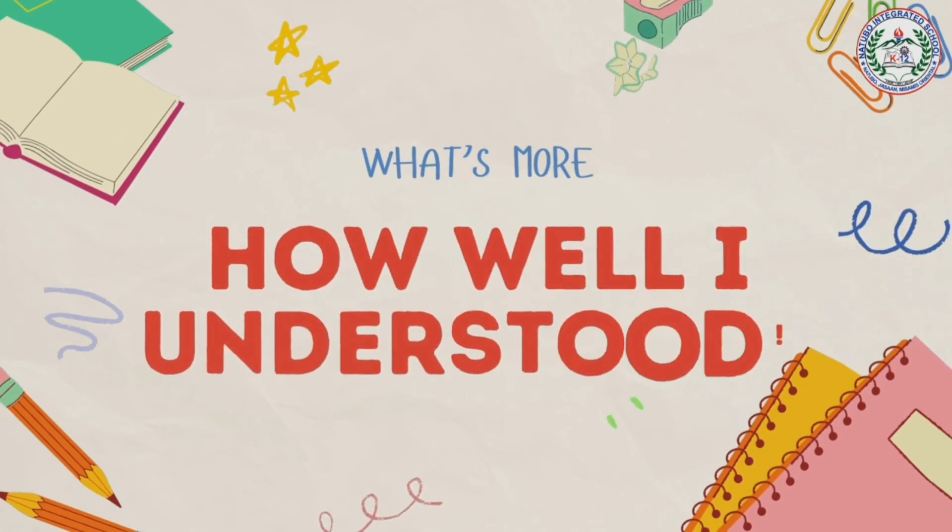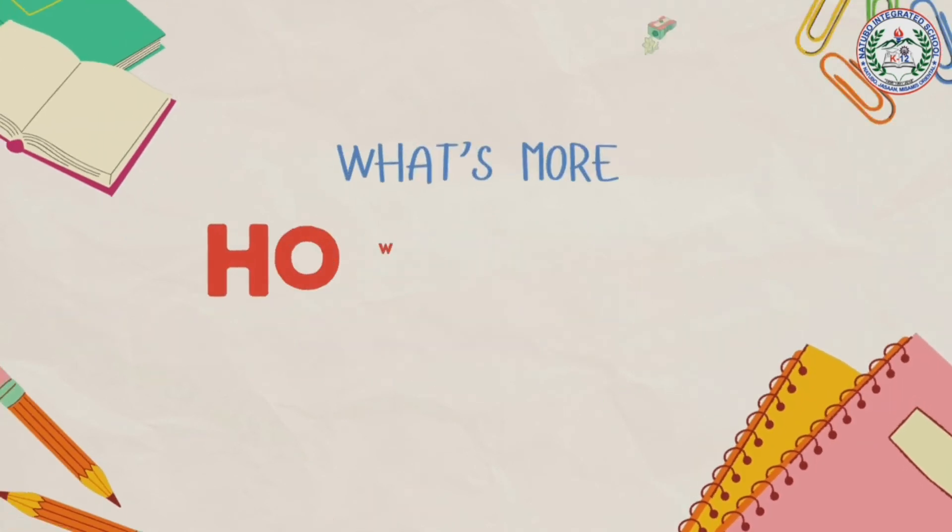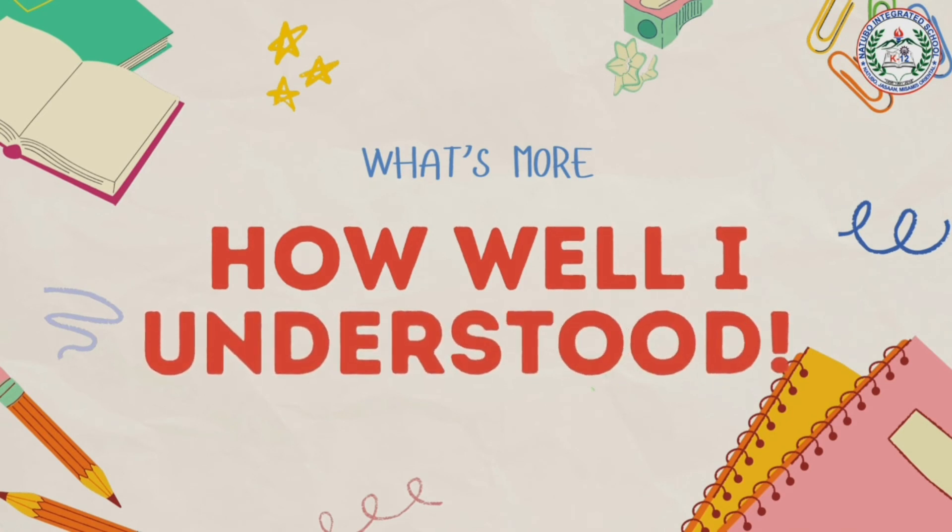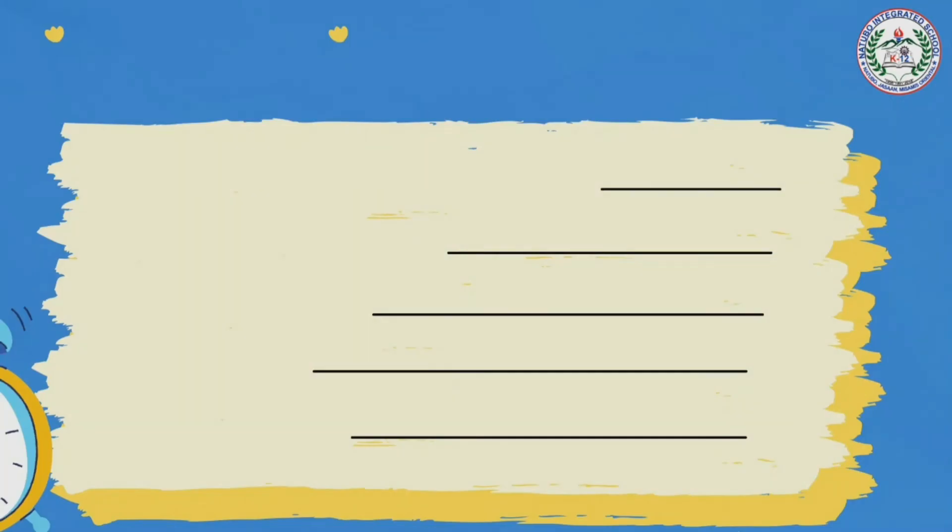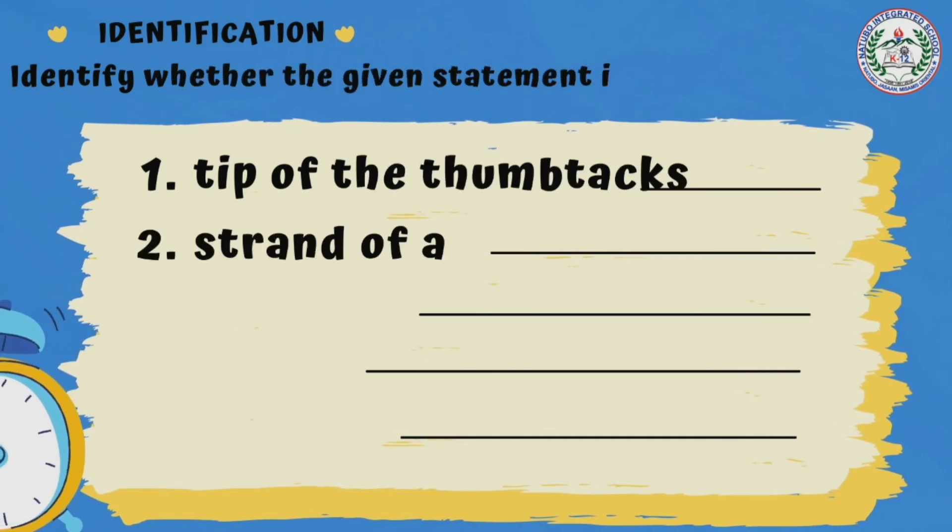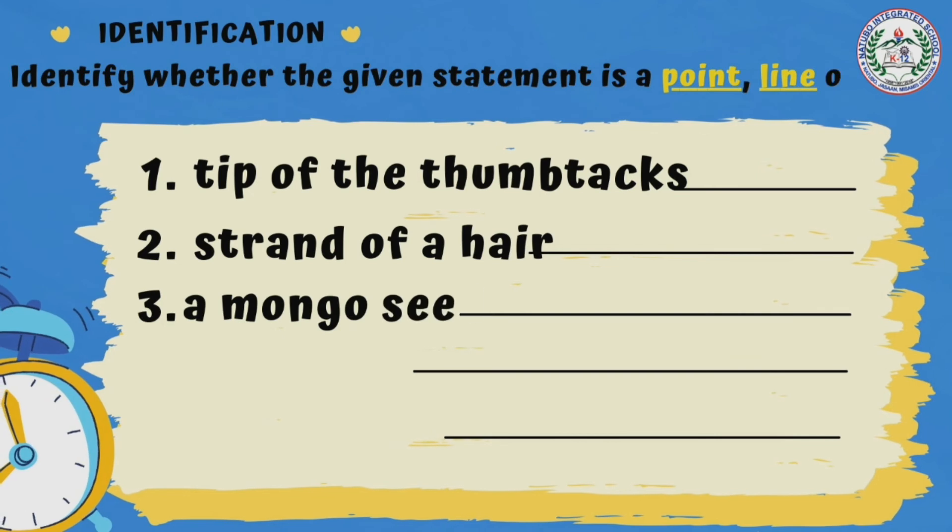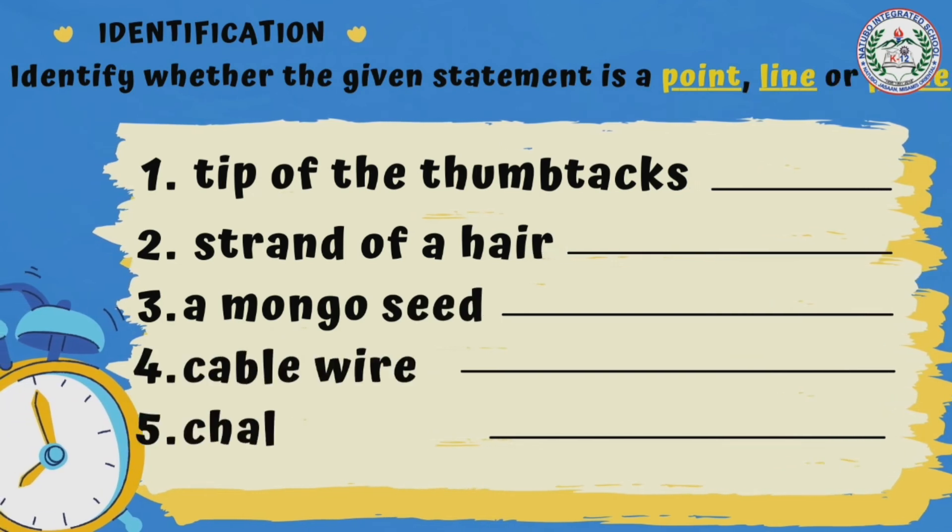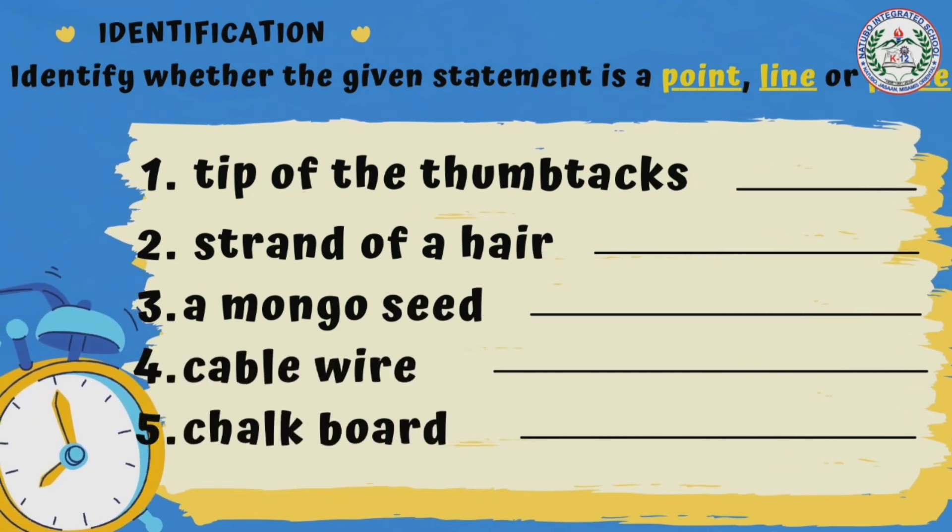I hope you understood the terms point, line, and plane as well as collinear, non-collinear, coplanar, and non-coplanar. Now, to know that, let us answer what's more to test whether you understood. It is an identification which you have to identify whether the given statement is a point, line, or plane. You can write your answers on a piece of paper and we'll check it after 30 seconds.